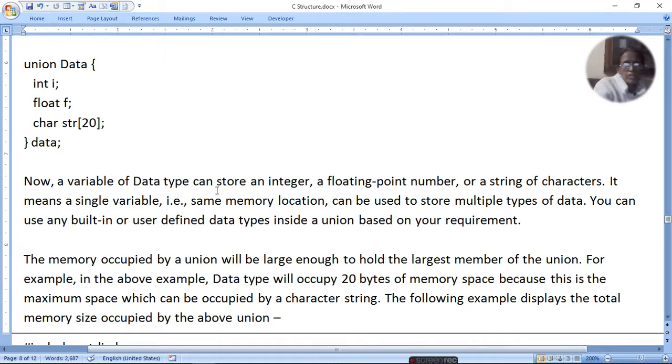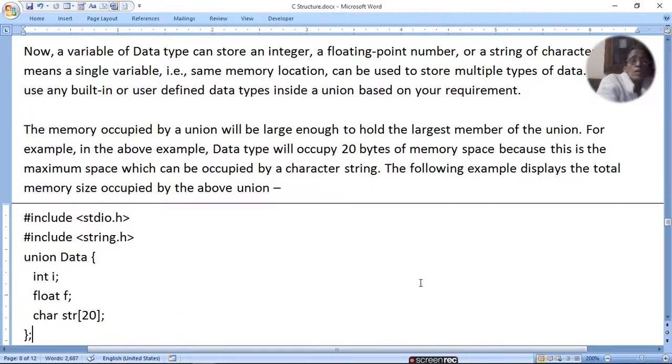Now a variable of data type can store an integer, float, string, or character. It means a single variable with the same memory location can be used to store multiple types of data. You can use any built-in or user-defined data type inside union based on your requirement. The memory occupied by union will be large enough to hold the largest member of the union. Here it will take 20 bytes.